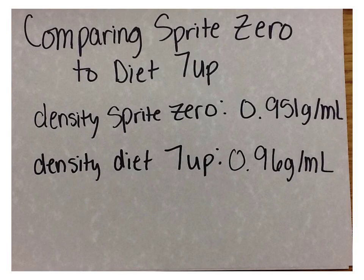When comparing the density of Sprite Zero to the density of Diet Seven Up, the density of the Sprite Zero is 0.951 grams per milliliter, and the density of Diet Seven Up is 0.96 grams per milliliter. Therefore, the density of the Diet Seven Up is greater than the density of the Sprite Zero.